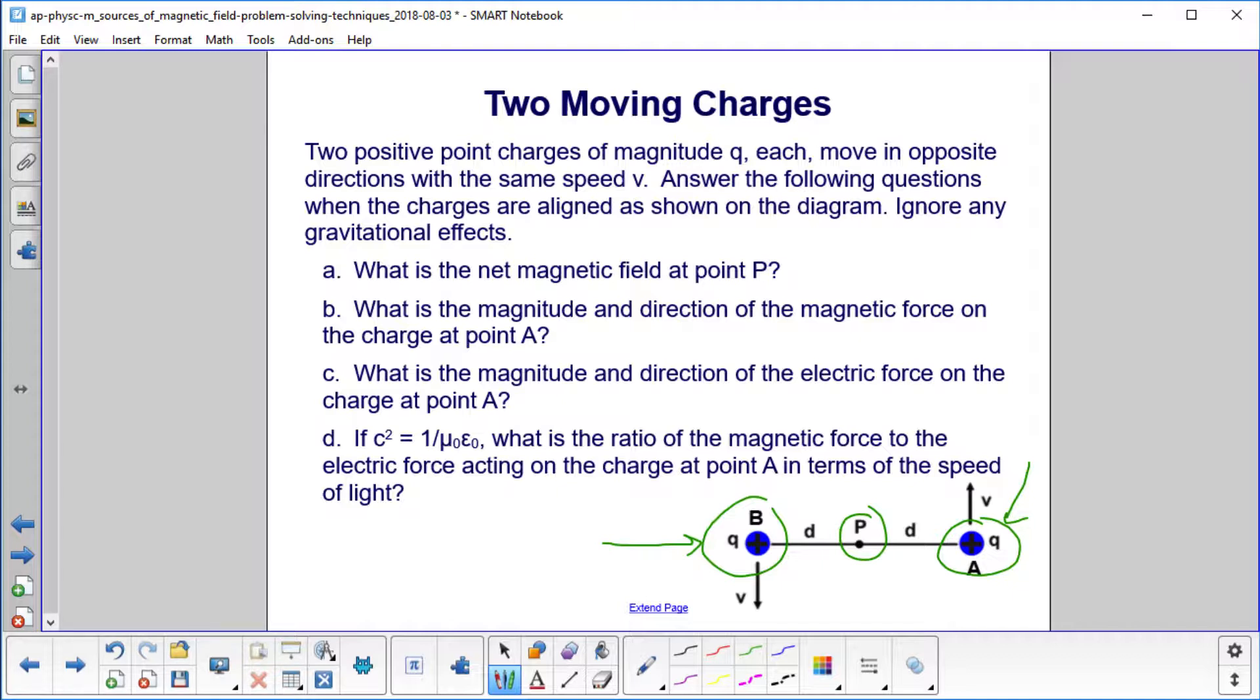Then if C squared, where C is the speed of light, equals one over mu zero epsilon zero, what is the ratio of the magnetic force to the electric force acting on the charge at point A in terms of the speed of light?